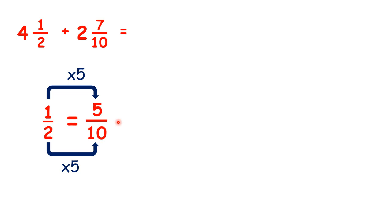So let's rewrite our question. 4 and 5 tenths plus 2 and 7 tenths. When we add up our whole numbers, we get 6. And when we add up our fractions, we get 12 tenths.